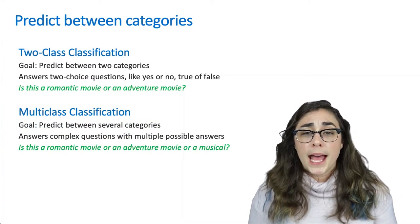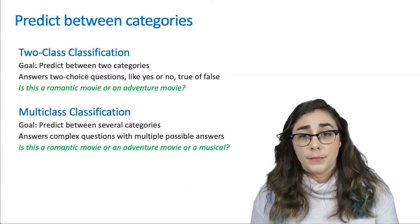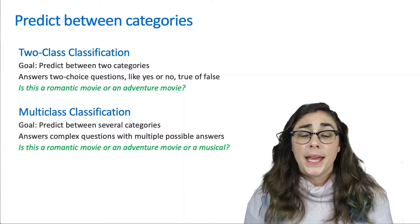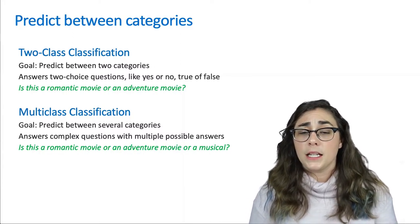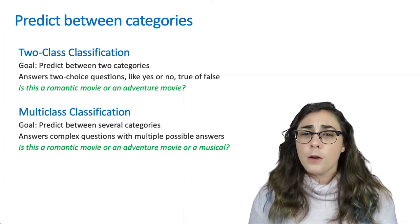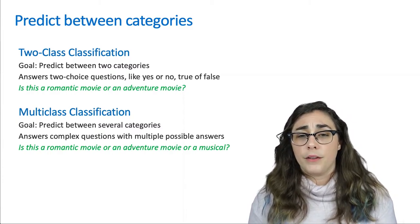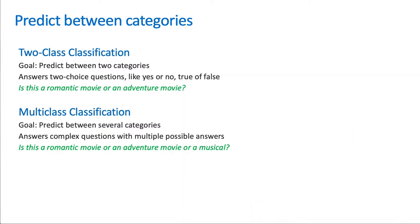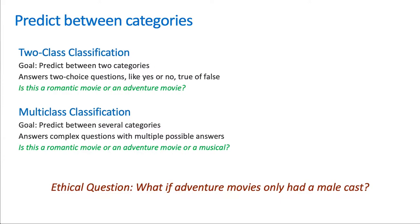First, we had predicting between categories. For example, a question might be, is this a romantic movie or is this an adventure movie? If our data only consisted of adventure movies that had all male cast, that would be a problem because then any movie that had a non-male actor in it would be classified as a romantic movie, and we know that's simply not correct.